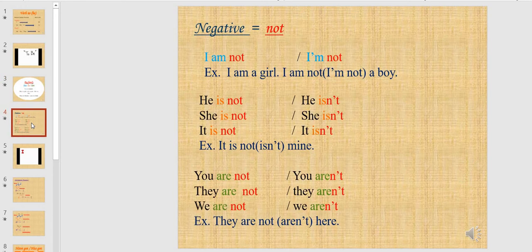Now let's move to another point, which is the negative form of verb to be. If I want to make a negative sentence using verb to be, I use not. For example, I am not a boy — I am a girl. So, I am not a boy. And the short form of I am not is I'm not. I am not a boy. I am a girl. I'm not a boy.